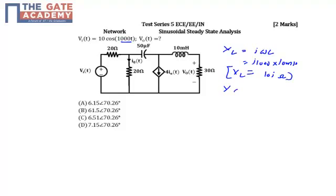Second thing, let's find out the value of XC which is 1 upon j omega C. Again omega is 1000, capacitance is given as 50 microfarad. So my XC will be equal to minus 20j ohm.